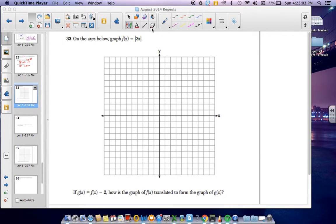Hello everyone, for number 33 we're going to take a look at our first graphing question where we're actually completing a graph, and that graph is going to be f of x equals the absolute value within the brackets of 3x.